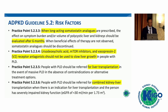When using long-acting somatostatin analogues, progress should be evaluated after six months. Other pharmacological treatments studied in the literature — such as deoxycholic acid and mTOR inhibitors — should not be used in this setting, as there is limited evidence and no demonstrated efficacy. Vasopressin receptor antagonists do not work for liver cysts and should not be used. Patients with very severe polycystic liver disease should be referred for multidisciplinary team review and considered for liver transplantation. Combined liver-kidney transplantation may be considered if GFR is below 30.